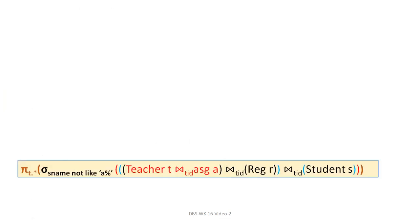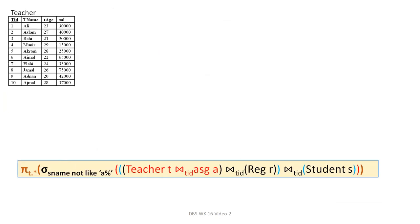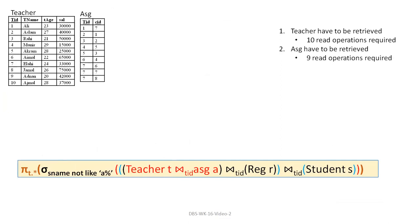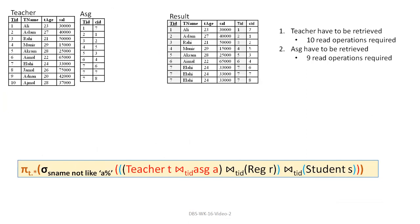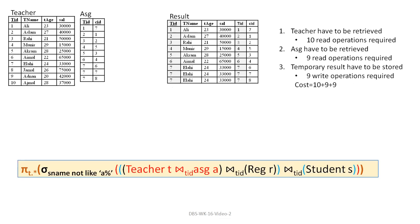First, Teacher and ASG need to be joined. Teacher must be read: 10 read operations. Then ASG must be retrieved: 9 read operations. After 9 and 10 reads, the result is formed — 8 records are produced as an intermediate result.